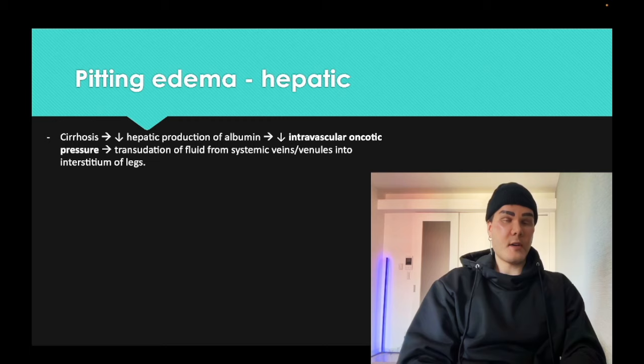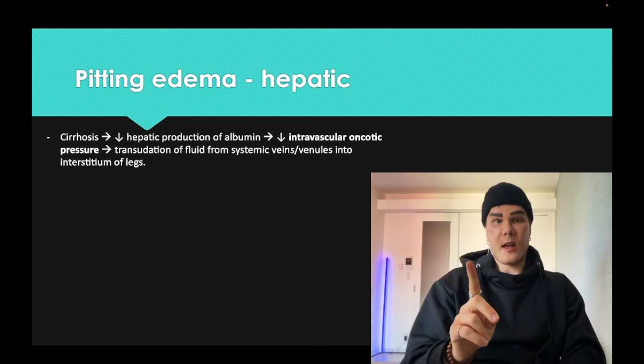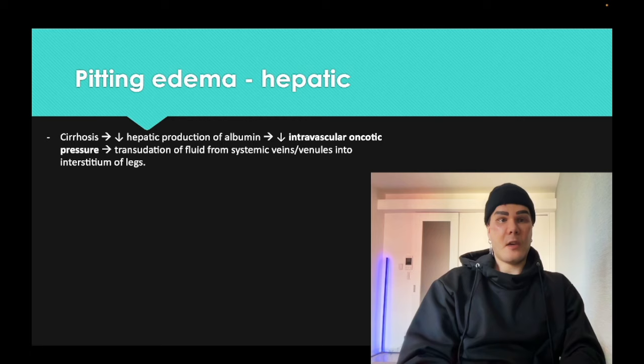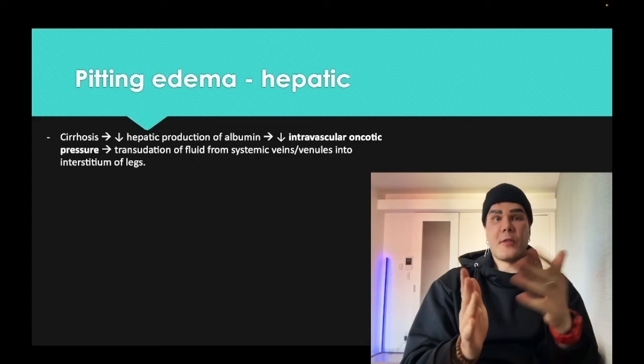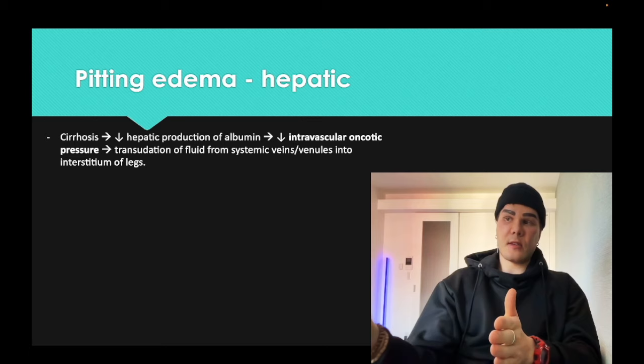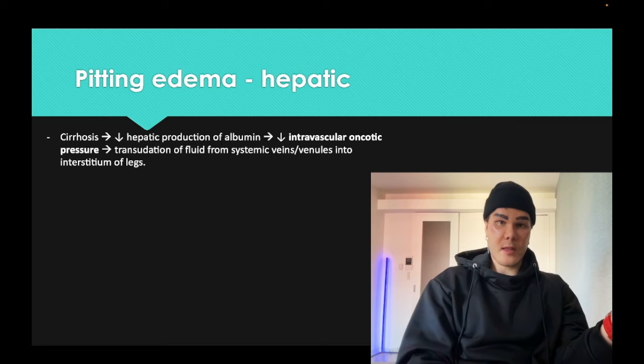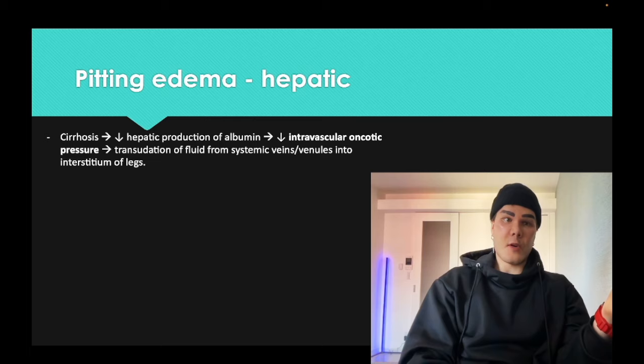Regarding ascites in the setting of cirrhosis, that would be increased hydrostatic pressure within the portal vein — fluid can't get through the liver. For ascites, it could technically be decreased oncotic pressure because we don't have albumin, or increased hydrostatic pressure from backup at the portal system. So if they ask you, you have to be open to either of those answers.